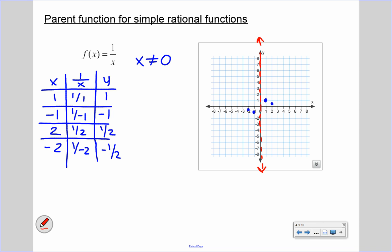Also, if we plug in anything for x, we can never get y equals 0, so y equals 0 is an asymptote as well. These asymptotes give us the framework of our graph. The curve starts very close to the asymptote, never touching it, then curves around — that's one branch of our hyperbola. We do the same on the other side, and that's your rational function graph.